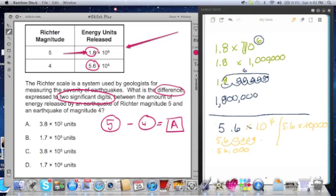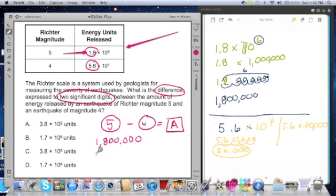So now we have here the essential ingredients we need to solve this problem. An earthquake with a magnitude of 5 is really equal to 1,800,000. And an earthquake with a Richter scale of 4 is really equal to 56,000. Major difference here. So when we subtract, because we're looking for the difference between the first to the second, we get 0, 0, 0.